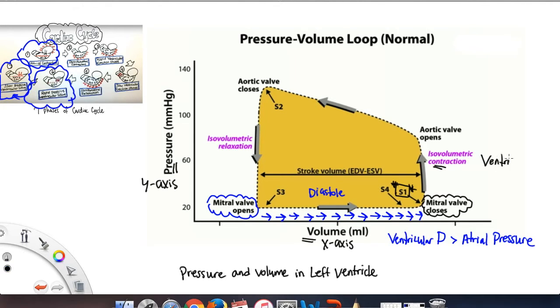Now, let's look at the next phase, the ventricular systole phase. So this is where there is isovolumetric contraction. So as you can see from the graph, the pressure is increasing, but isovolumetric means that the volume remains the same.